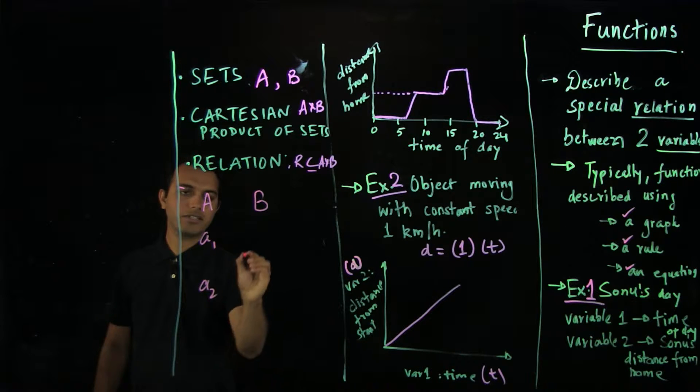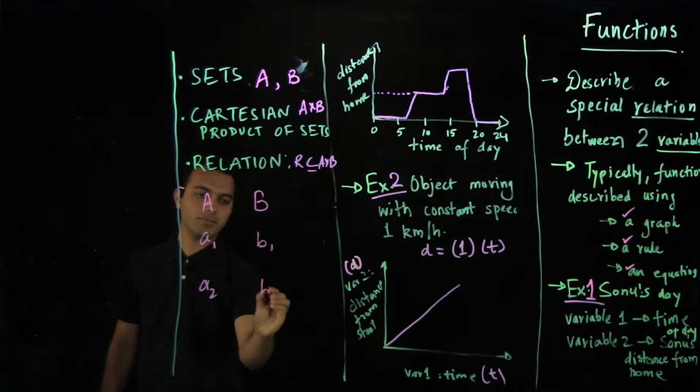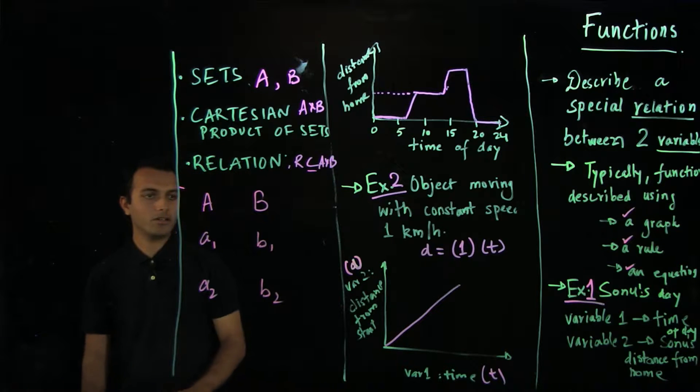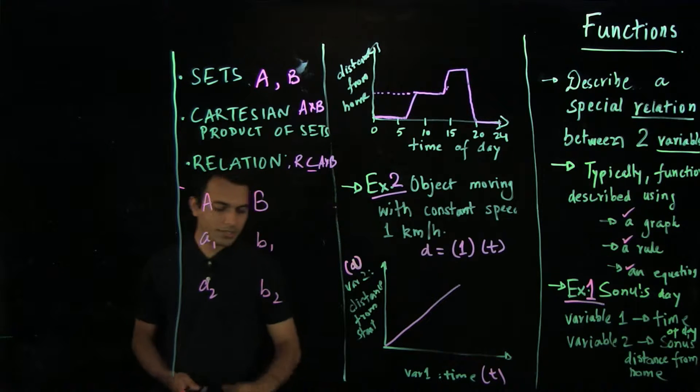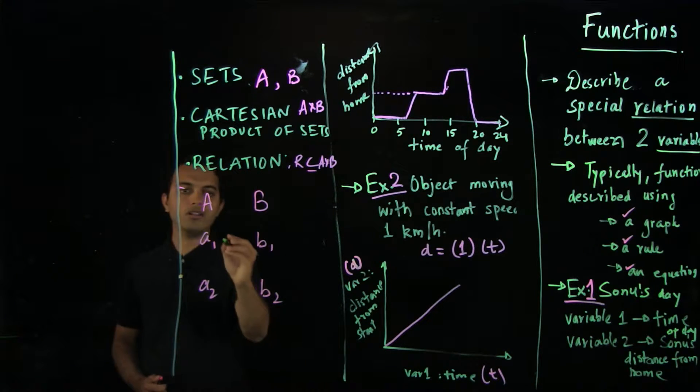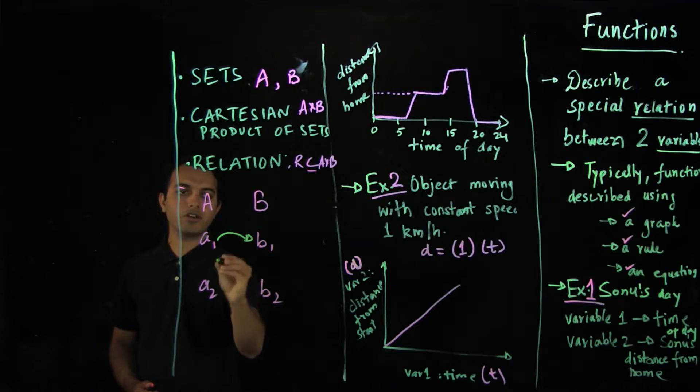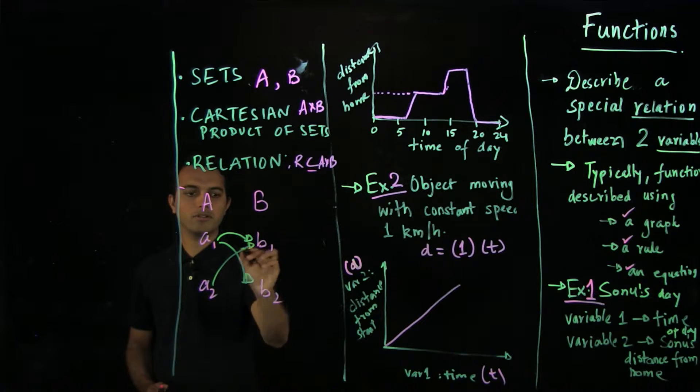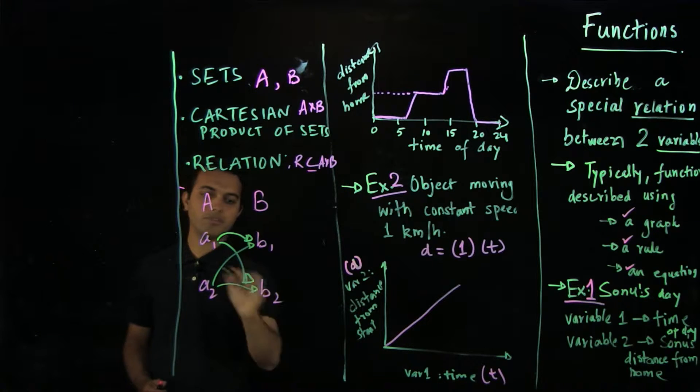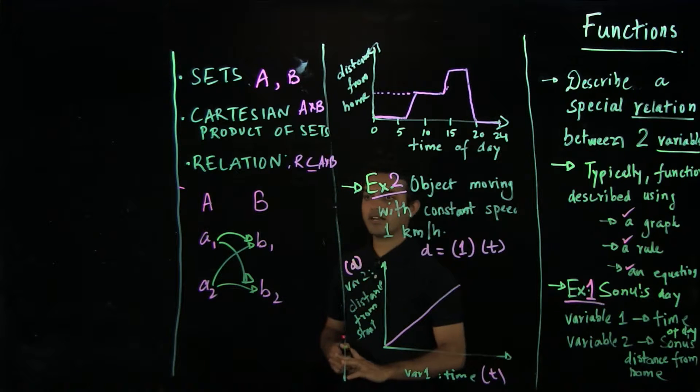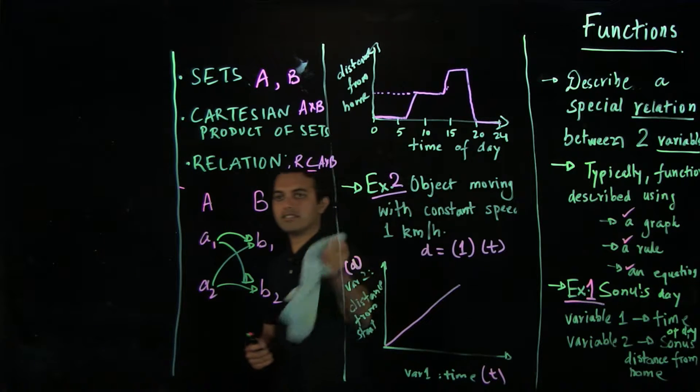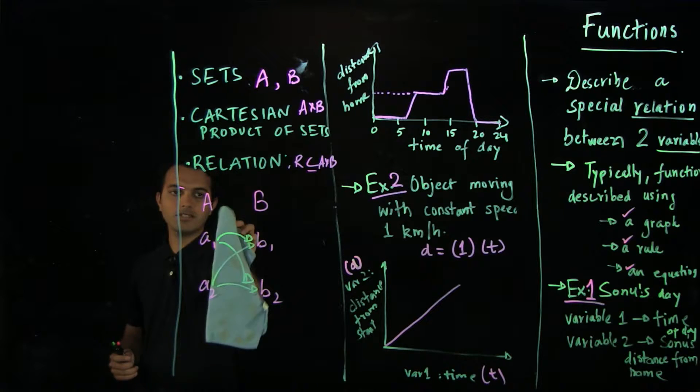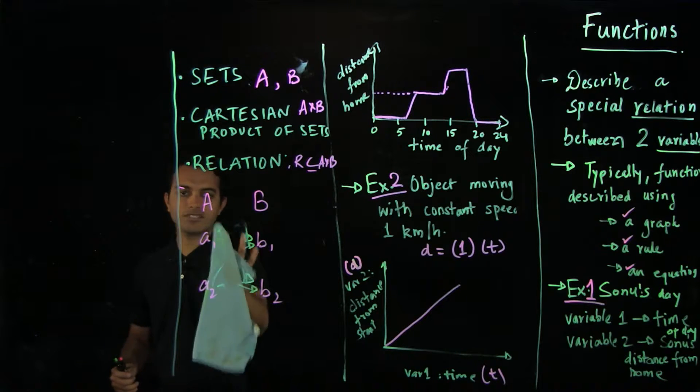A had two elements, a1 and a2. B had two elements, b1 and b2. And if we consider the Cartesian product, it will have all the ordered pairs. So a1 comma b1, a2 comma b2, and a1 comma b2, and also a2 comma b1 and a2 comma b2. So all the possible pairs will be there in Cartesian set. But a relation is a subset of the Cartesian set, so it can have some of the edges missing.